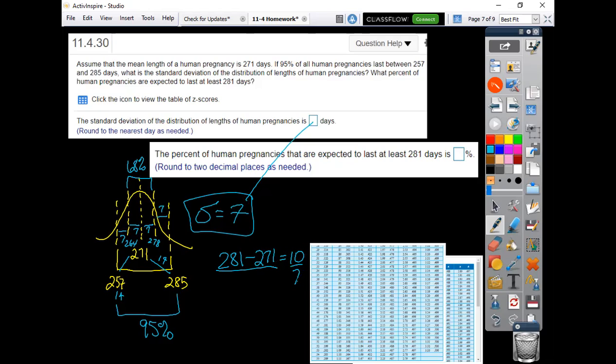And 10 divided by 7, since our Z-scores are usually in decimals, is going to be 1.42857-ish because it keeps going. So this is our Z-score, a little less than one and a half standard deviations above the mean up here.